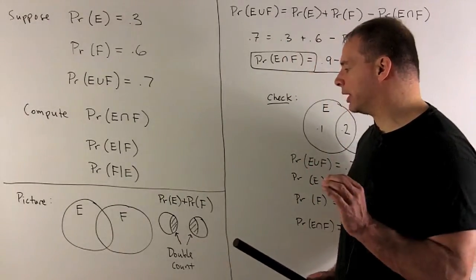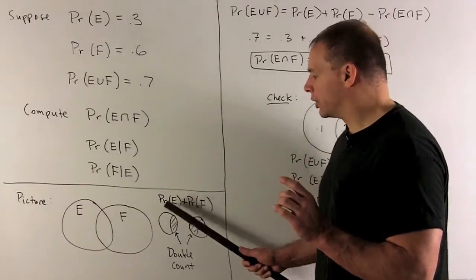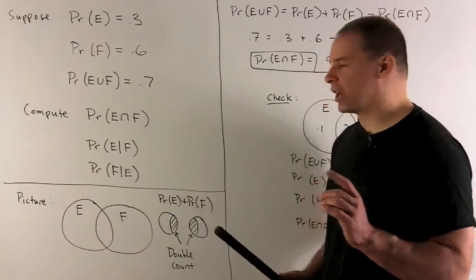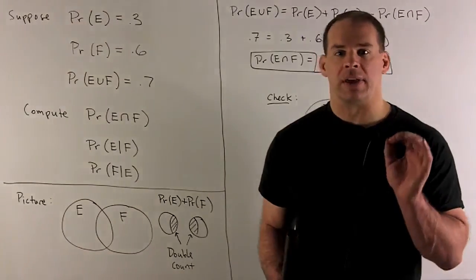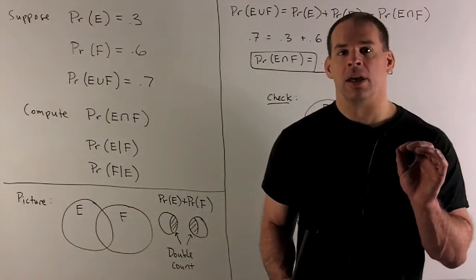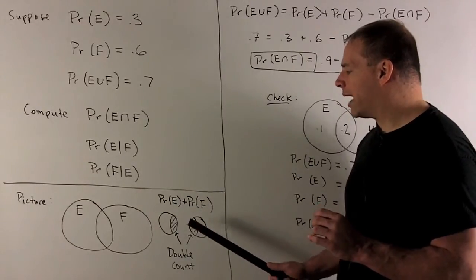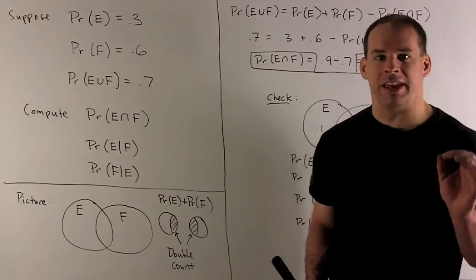Let's take a look at E and F separately. So E is going to split into two pieces, the intersection piece and the non-intersection piece. So when I think about what's happening with the probability, if I just take probability of E plus the probability of F, we wind up contributing the probability of the intersection twice.